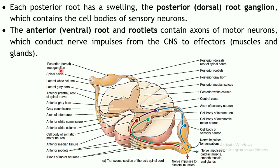The posterior root on either side contains the cell bodies of all the sensory neurons arriving at that location — that is why it is slightly swollen and called the posterior or dorsal root ganglion. The posterior root ganglion contains cell bodies of sensory neurons. The collection of cell bodies in the periphery is called ganglia, while those in the CNS are called nuclei.